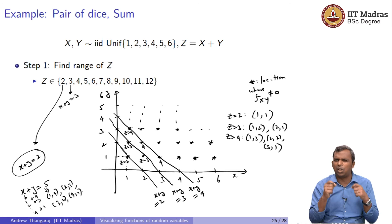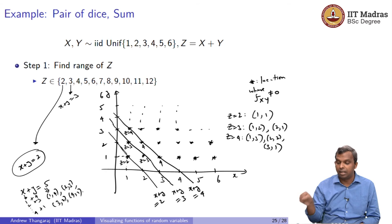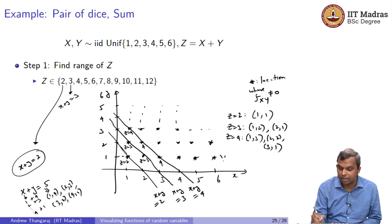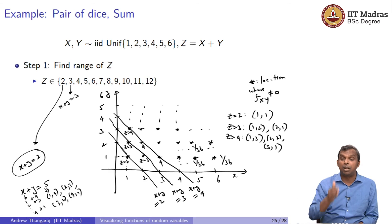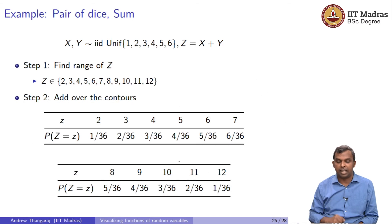Essentially, you have to solve the problem of what pairs x, y give me a particular value for g of x, y. You can either visualize it graphically with the line or you can just visualize it algebraically with the equation. But nevertheless, it is a slightly non-trivial problem. You have to count how many values of x, y give you one particular value of z. It is a slightly involved problem, but it can be done. Once you do it, the answer is very simple. Because each value x, y has a probability of 1 by 36.